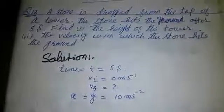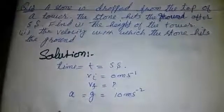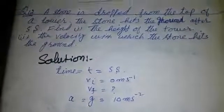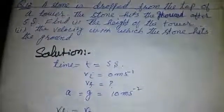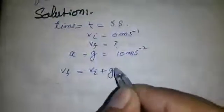We use the first equation: vf equals vi plus gt.